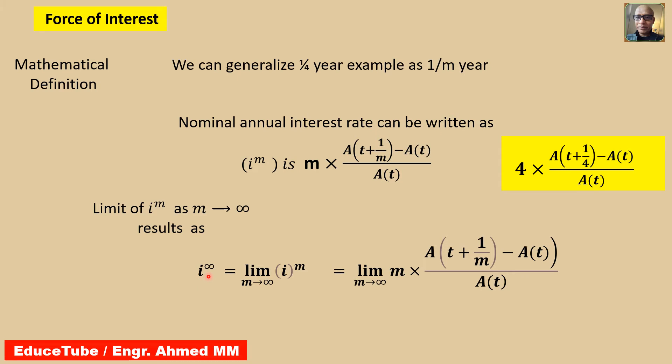So what comes? i^(∞) equals the limit of i^(m) as m tends to infinity. Now this i^(m) is nothing but this expression, so bring this term here. We get i^(∞) equal to this term.